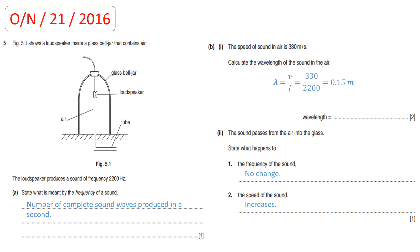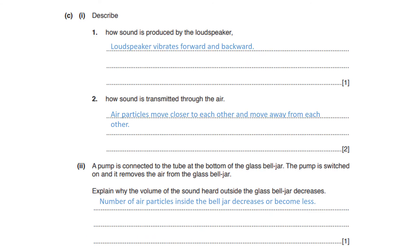Part B2: the sound passes from air into the glass. Glass is a solid, and the speed of sound is greater in solids than in gases, so the speed of the sound wave increases as it enters the glass. However, the frequency of the sound wave remains constant — there is no change in frequency. So when sound travels from air into glass, speed increases but frequency stays the same.